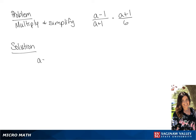We are going to multiply these two fractions: (a minus 1) over (a plus 1), times (a plus 1) over 6. We can simplify this because (a plus 1) over (a plus 1) is 1, so if we multiply this we get (a minus 1) over 6 as our final answer.